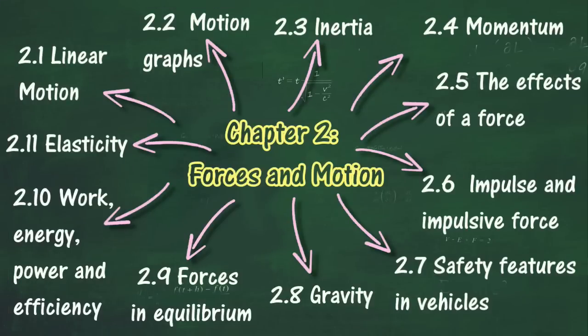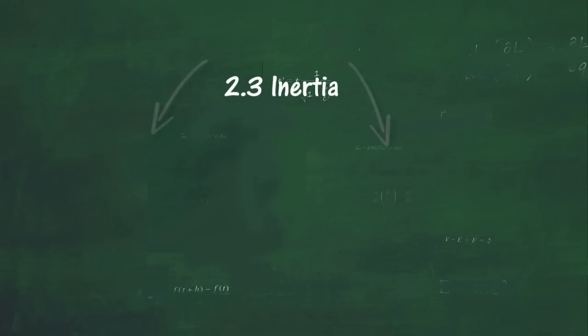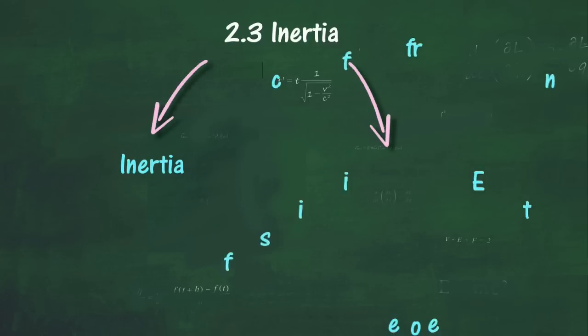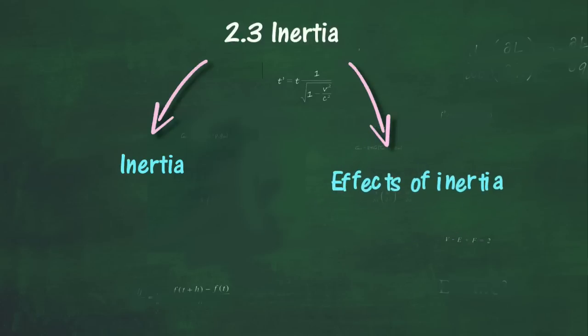In Section 2.3, we will learn about Inertia. At the end of this section, you should be able to: Explain what inertia is, Relate Mass to Inertia, Give examples of situations involving inertia, and Suggest ways to reduce the negative effects of inertia.